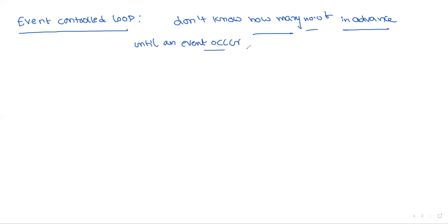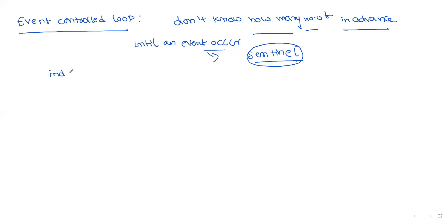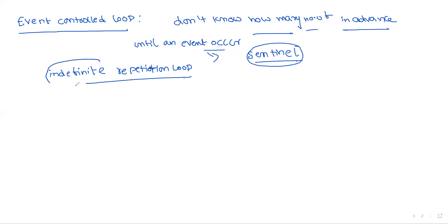Until some event occurs — whatever that event is, that special value is generally called a sentinel value. This value is used to change the execution of the loop. The counter-controlled loop is called a definite loop, whereas the event-controlled loop is called indefinite reiteration.